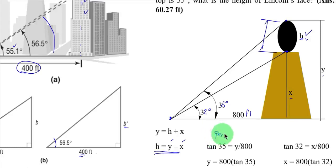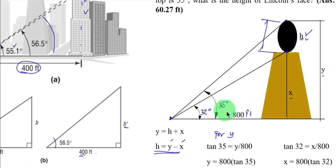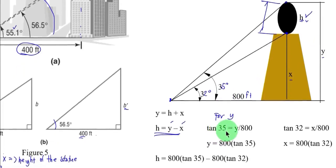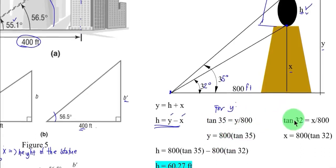So this is for y. So you can solve for y by referring to the bigger triangle with height of y to the base of 800 with an angle of 35 degrees. So that is again, since the given is adjacent of the angle and the side we want to solve is the opposite side, so therefore, we can use tangent again. So tangent 35 equals y over 800, or that is simply y equals 800 multiplied by tangent 35. Then for x, this is your for x. So tangent 32 equals x over 800, or simply x is 800 multiplied by tangent 32. So here we can solve now h.